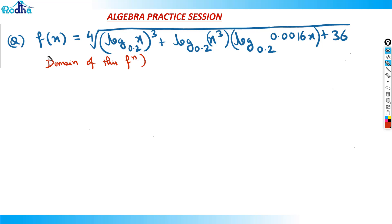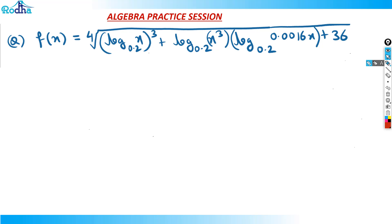That will clear a lot of concepts actually. The question says that f(x) is equal to log of x to the power 0.2, base 0.2, times x cubed, plus log of x cubed base 0.2, and log of 0.0016x plus 36, base 0.2. This is a fourth root. We need to find the domain of this function.